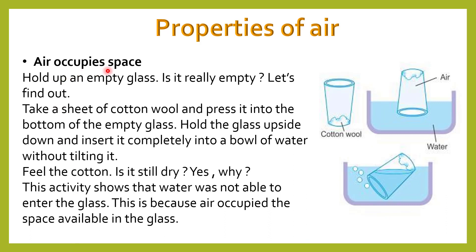The next property of air is that air occupies space. Take a sheet of cotton wool and press it into the bottom of an empty glass. Fold the glass upside down and insert it completely into a bowl of water without tilting it. Feel the cotton — it is still dry. This shows that water was not able to enter the glass because air occupies the space inside it. Now tilt the glass inside the water and you will observe air bubbles coming to the surface and water moving inside the glass, making the cotton wet.